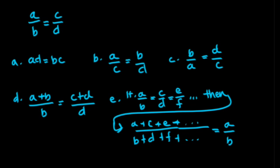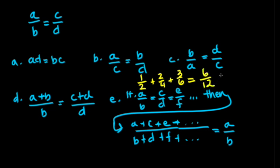To make this clearer: if we had 1 over 2 plus 2 over 4 plus 3 over 6 — these all equal one half. Adding them all up gives 6 over 12, and this is equal to just using one of the proportions. So instead of adding all of them up, you could just pick one ratio and say the entire sum is equal to that.